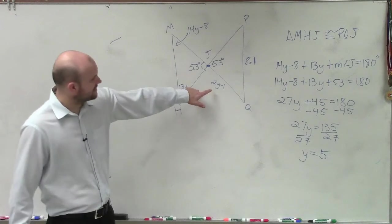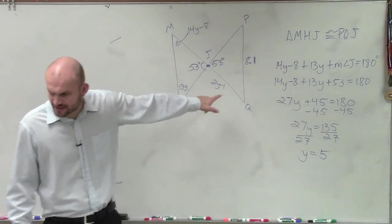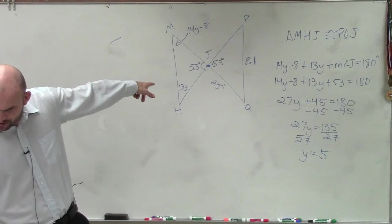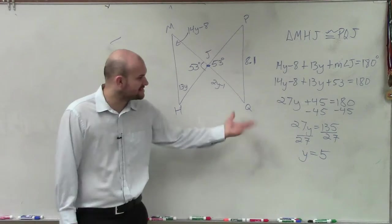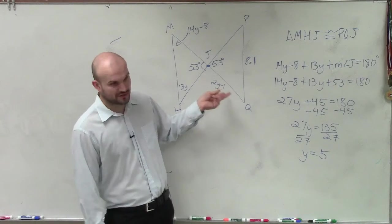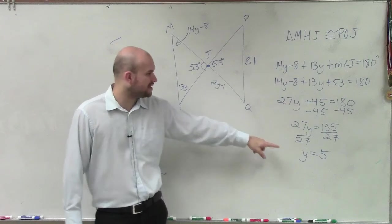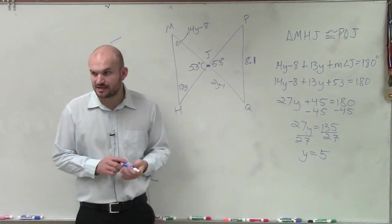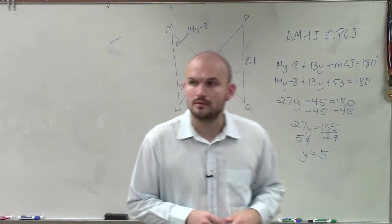Now, the last thing is, did they ask to solve for y or find all the measurements? Find the value of variable that yields the congruent triangles. Okay. So it just has to find the measure of y. So that would be it. If they said to find the measure of the side length or the angles, then you just plug in 5 for your variable to find each measurement.